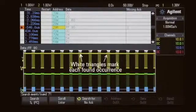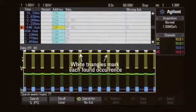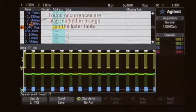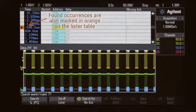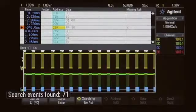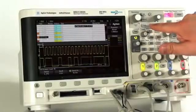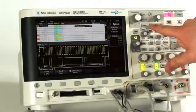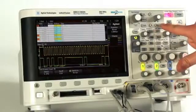The white triangles mark each found occurrence from our search. These frames are also marked in orange in the first column of our Lister table. The number of found events is also indicated near the bottom of the display. To navigate to each frame that the search has found, press the front panel navigation keys near the time base controls.